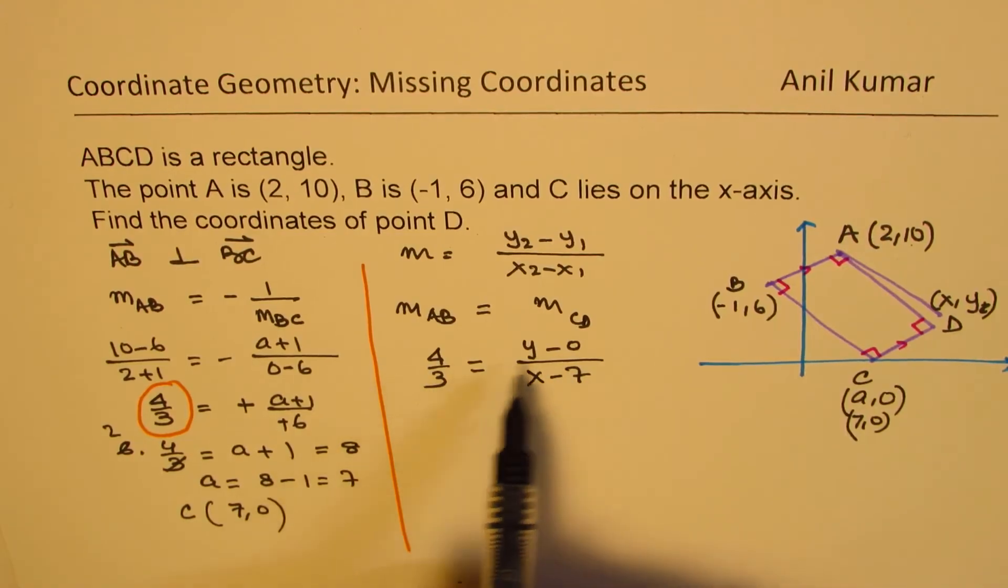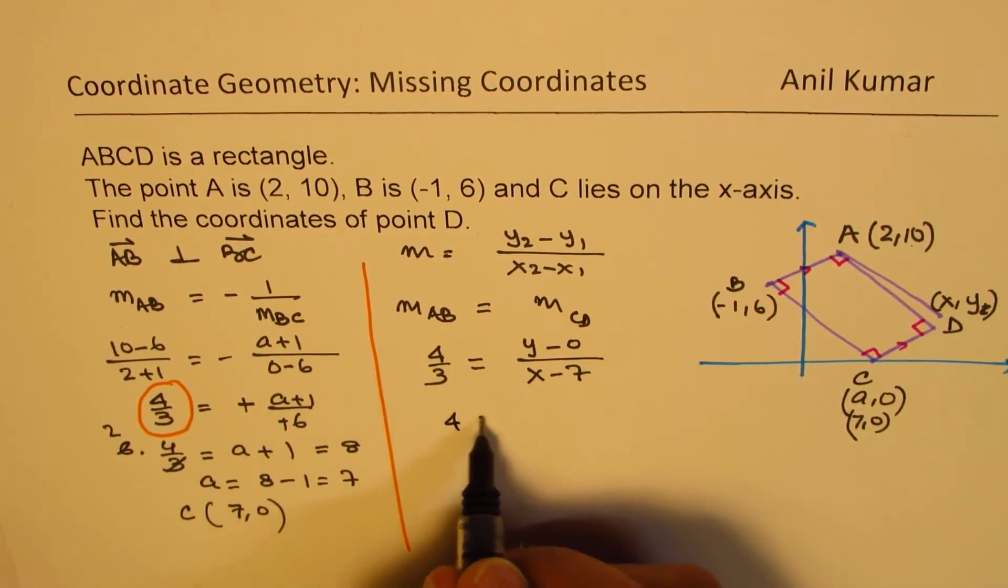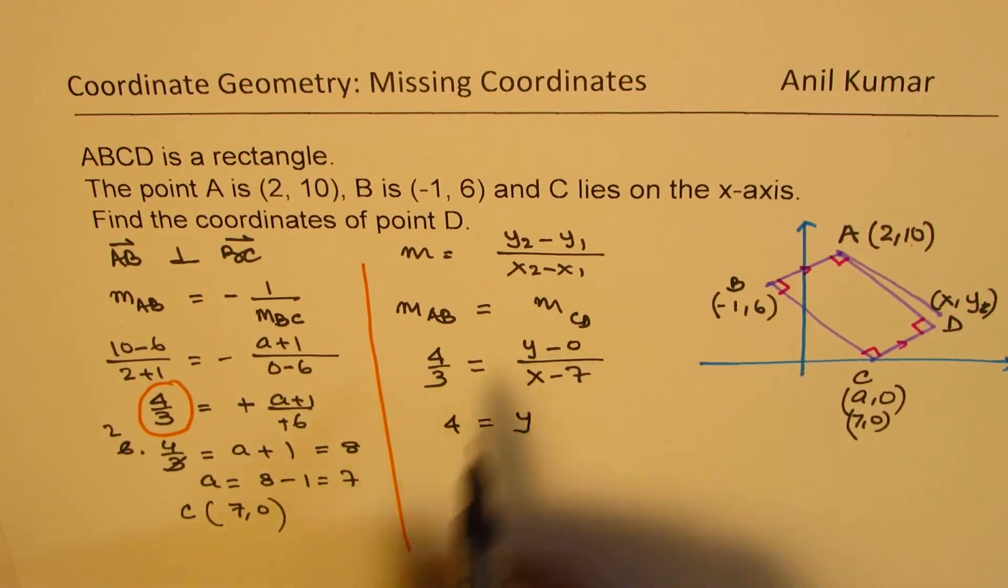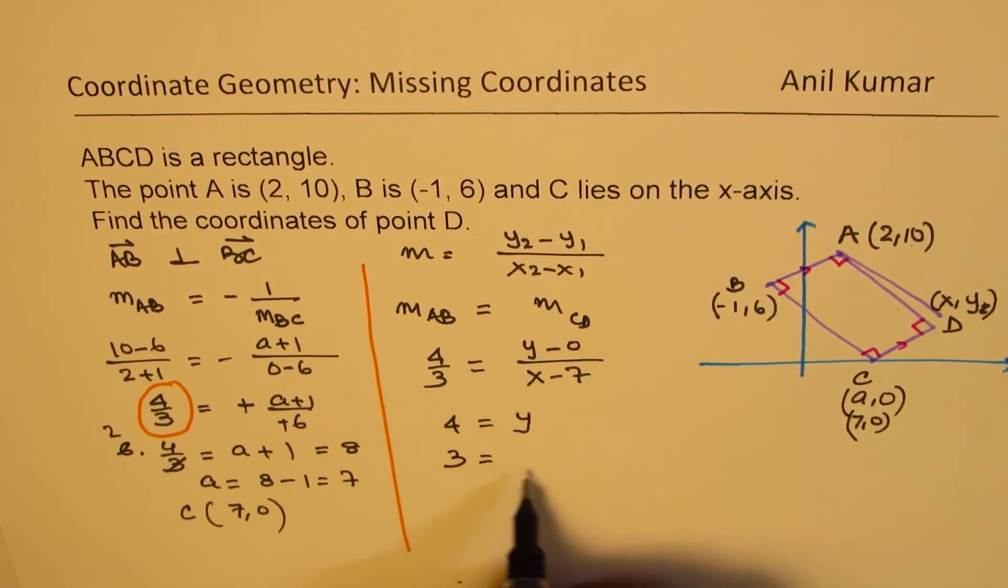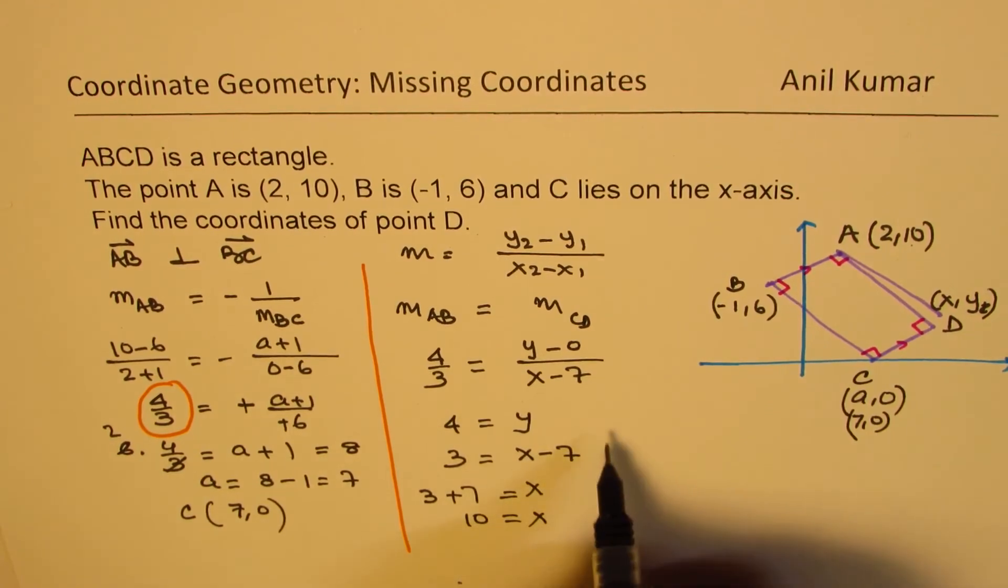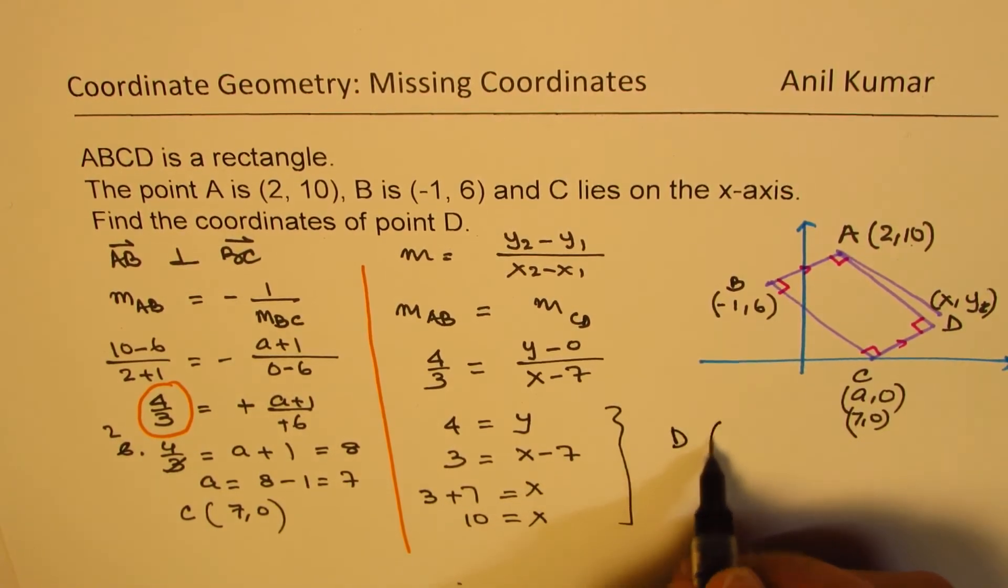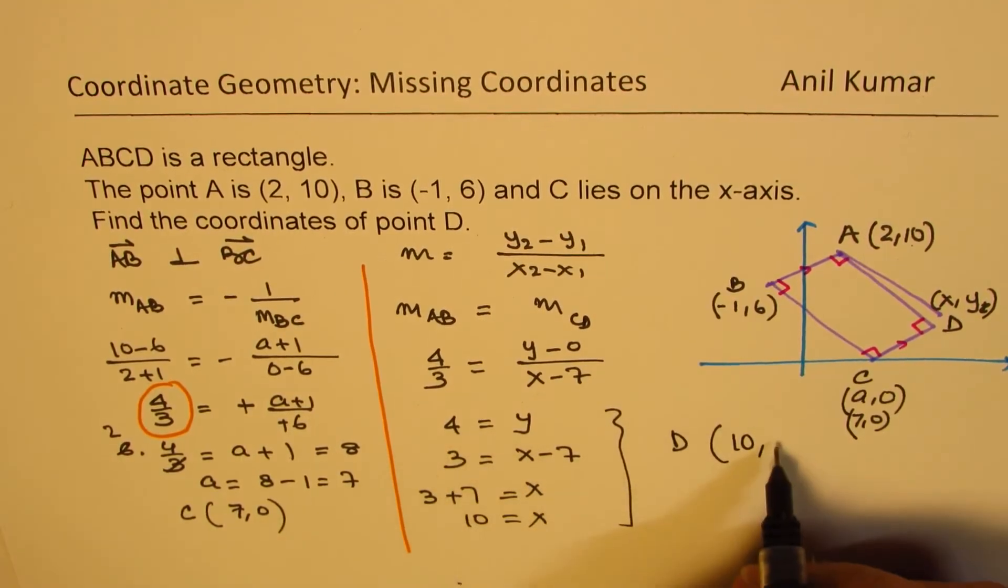Now from here, y should be equal to 4. That means 4 is equal to y. We get one value. As far as x minus 7 is 3, we get 3 equals to x minus 7 or x equals to 3 plus 7, which is 10. So now we get the coordinates for point D, which are x value is 10 and the y value is 4.